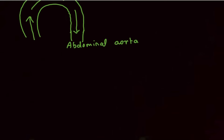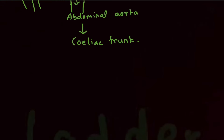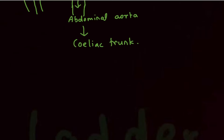The arc of aorta is where three branches come off going towards the face and head. When the descending aorta reaches the abdomen, we call it the abdominal aorta. The abdominal aorta gives branches, and the most important one is the celiac trunk, which gives off the major branches supplying the abdomen. The celiac trunk is present at the T12 level.